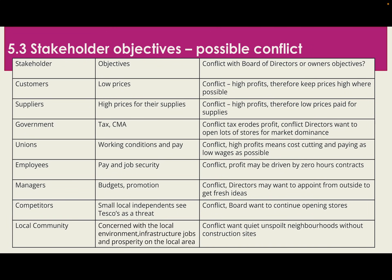I've included a recap of stakeholder objectives — stakeholders listed down the left-hand side with what they are trying to achieve. We then have to think about the conflict between stakeholder objectives and what the board of directors is trying to achieve. In a private business, the board is concerned with high profits and return on investment for shareholders. For example, customers want value for money and low prices, but satisfying those needs costs money — which reduces profits. So there has to be some kind of balance.